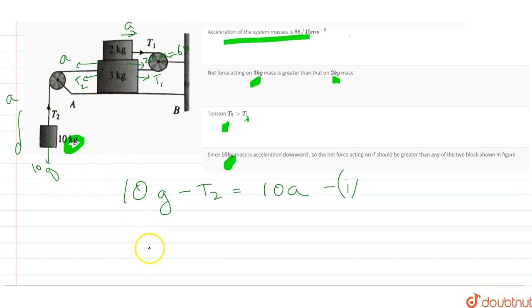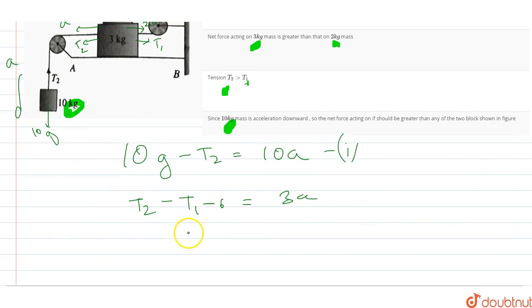So if I want to write a FBD equation for the 3kg block, T2 minus T1 minus 6 is equal to 3a. This value is here. I will call this equation 2.